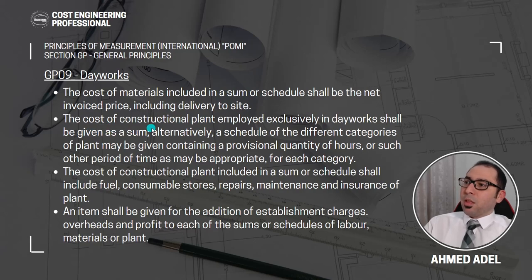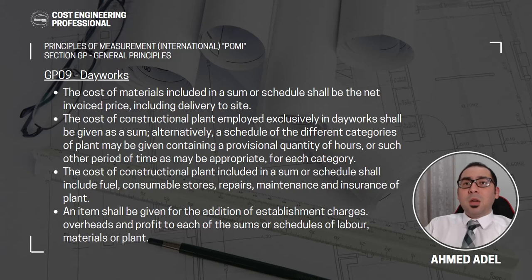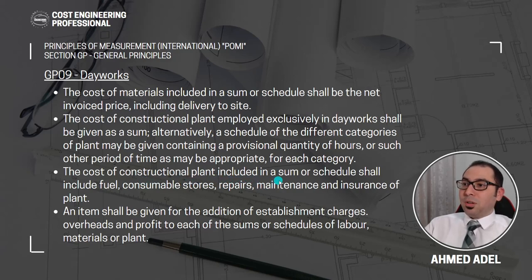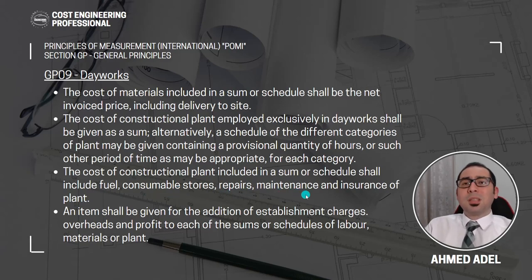The cost of constructional plant employed exclusively in day works shall be given as a sum. Alternatively, a schedule of different categories of plant may be given containing a provisional quantity of hours or other appropriate period for each category. For example, for scaffolding you could put the hire rate for a given square meterage per month. The cost of constructional plant in a sum or schedule shall include fuel, consumable stores, repairs, maintenance, and insurance of plant.